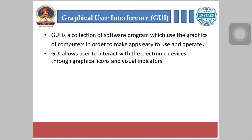Hardware user interface includes wires, plugs, and sockets — hardware devices used to communicate with each other. GUI, or graphical user interface, is the collection of software programs which use the graphics of computers in order to make the application easy to use and operate.